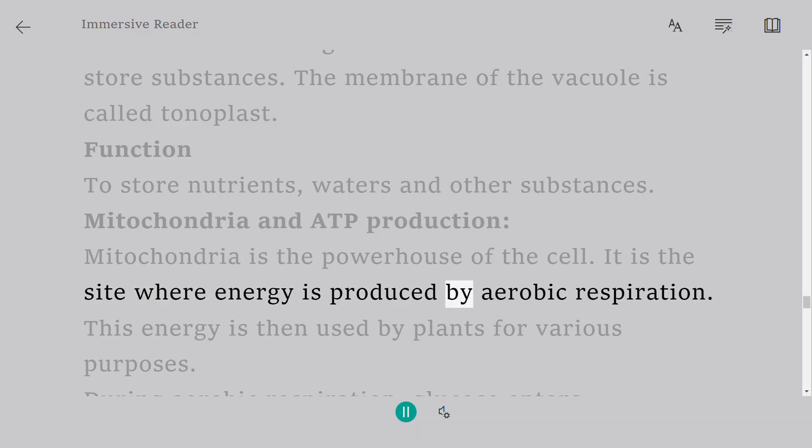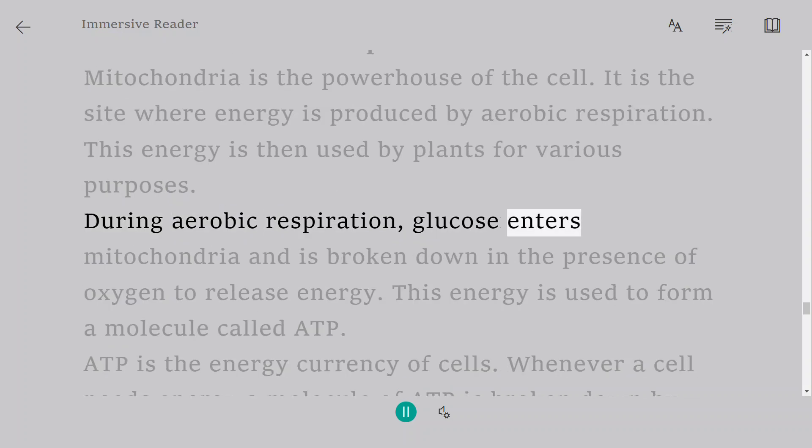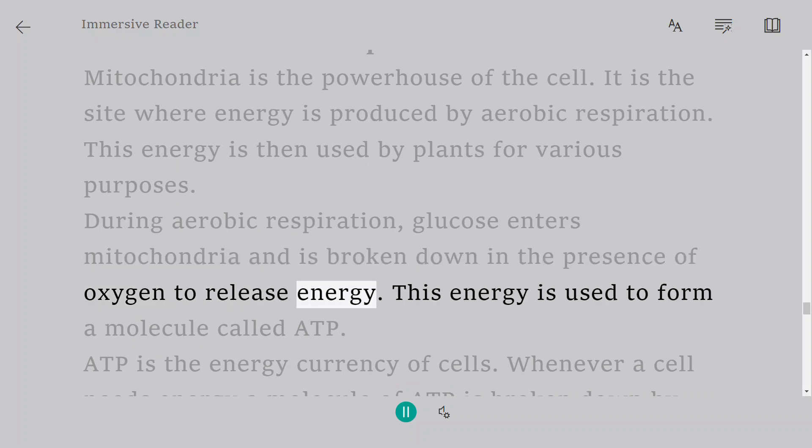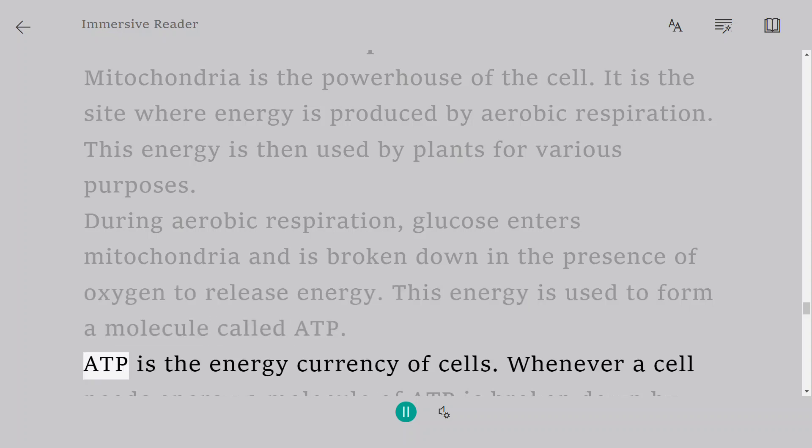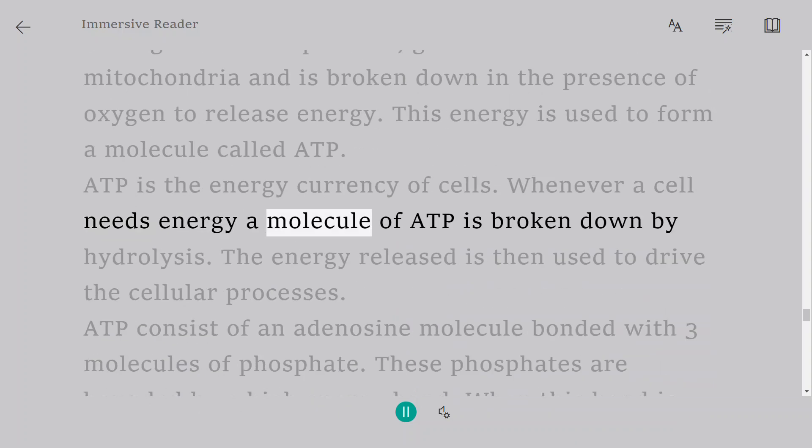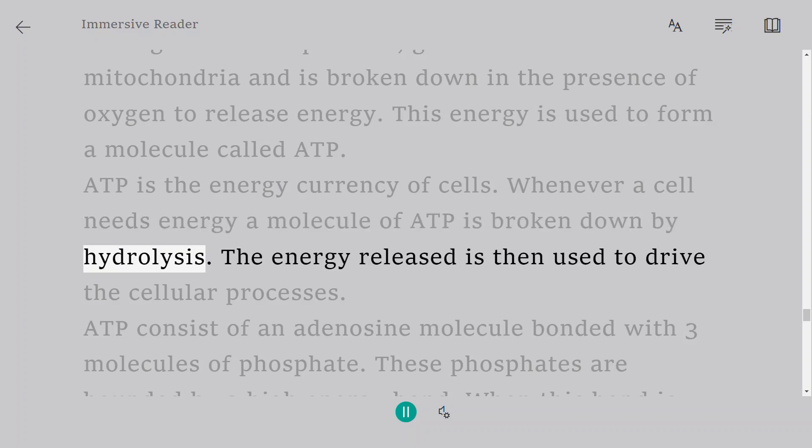Function: This is the site where energy is produced by aerobic respiration. This energy is then used by plants for various purposes. During aerobic respiration, glucose enters mitochondria and is broken down in the presence of oxygen to release energy. This energy is used to form a molecule called ATP. ATP is the energy currency of cells. Whenever a cell needs energy a molecule of ATP is broken down by hydrolysis. The energy released is then used to drive the cellular processes.